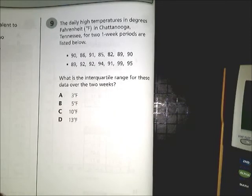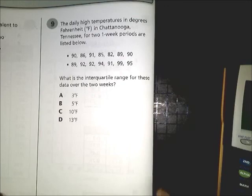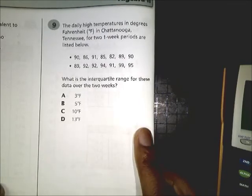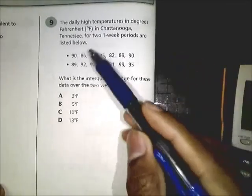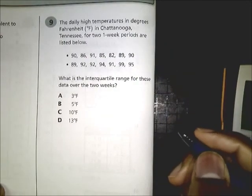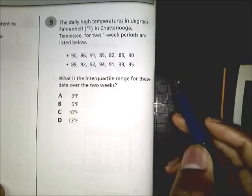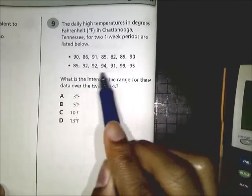All right, this is the Algebra 2 practice EOC question number 9. The question says the daily high temperatures in degrees Fahrenheit in Chattanooga, Tennessee for two one-week periods are listed below. So all these temperatures here, what is the interquartile range?